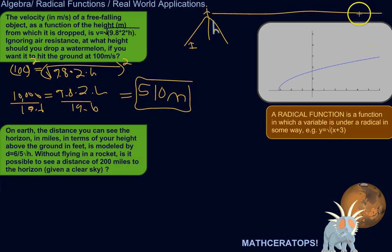So, without flying in a rocket, is it possible to see a distance of 200 miles? So, what we can do is, we could say, alright, let's see a distance of 200 miles is equal to 6 fifths times the square root of the height. And then solve for height and see if that's a reasonable height.